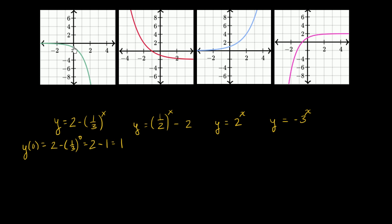Here x equals 0, y equals negative 1. Here x equals 0, y equals negative 1, or it looks like negative 1. Here x equals 0, y looks like 1, so this is a candidate. And here when x is equal to 0, y also looks like 1. So these last two seem like candidates for this function definition.